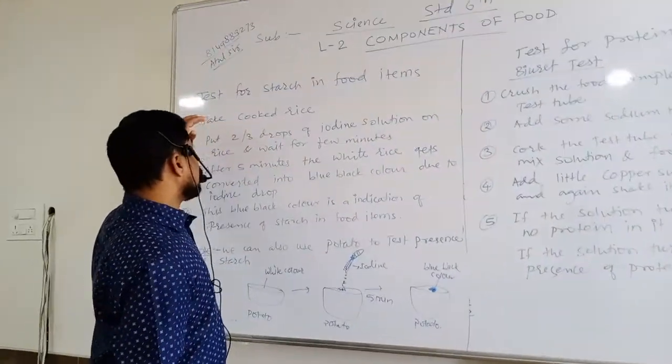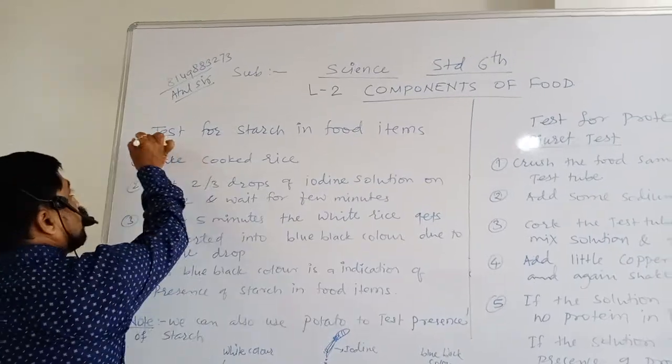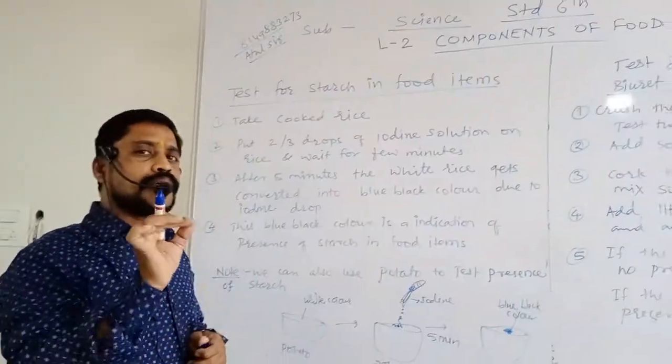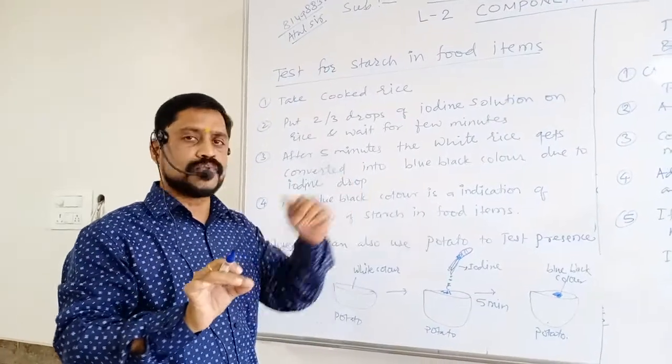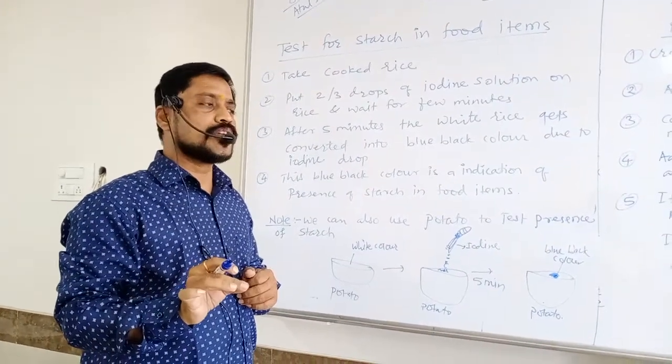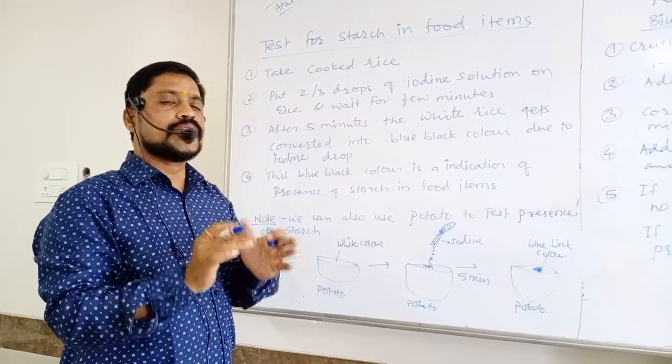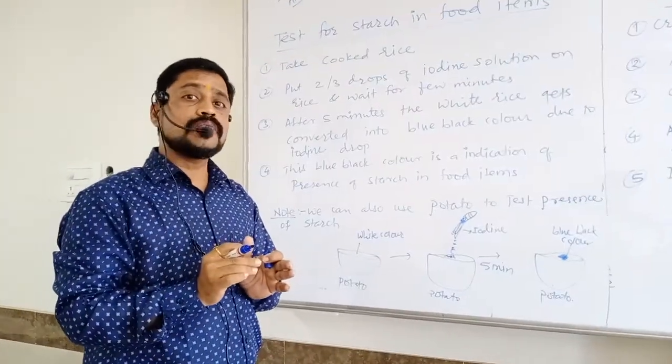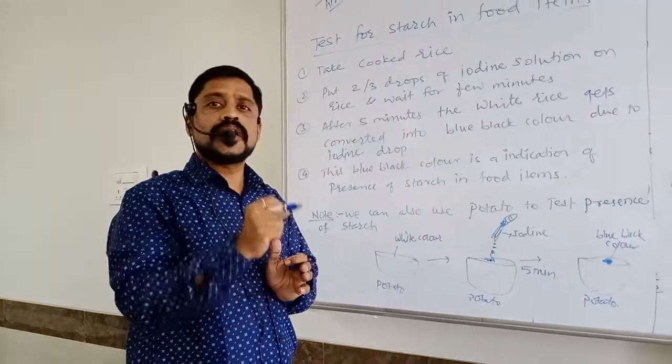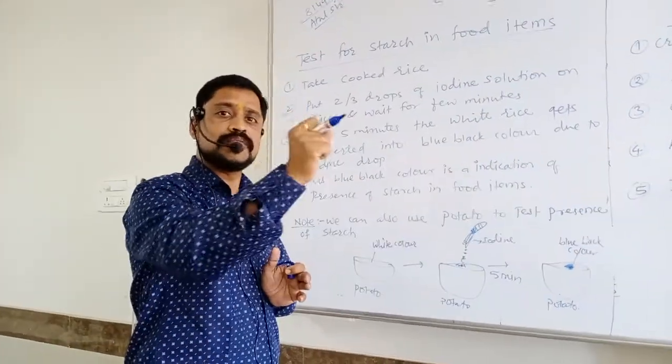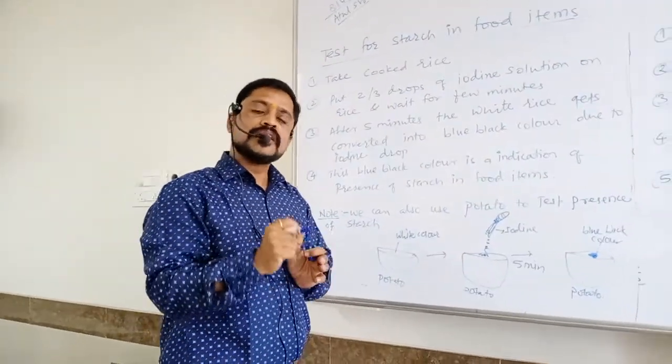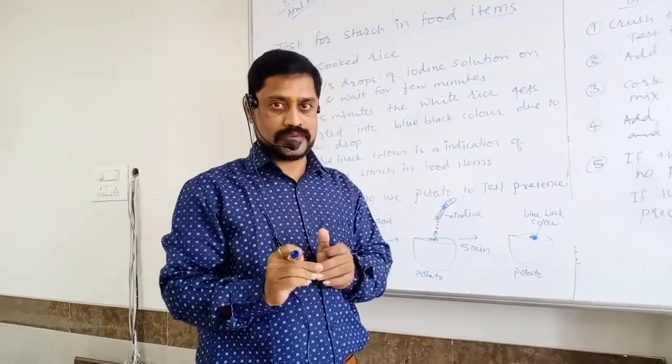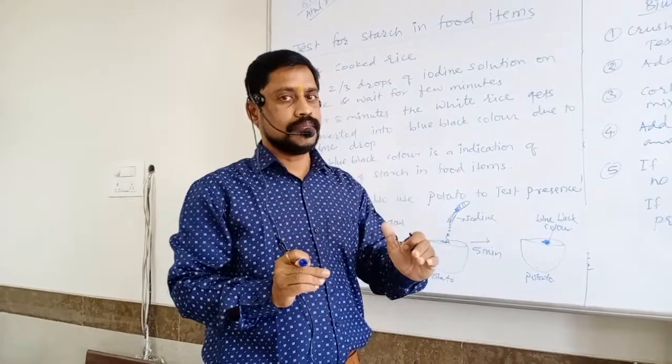In this we have to understand the presence of particular nutrients in the given food items. As we know that we have learned protein rich food, carbohydrate rich food and fats rich food. But how can we confirm that whether really carbohydrates present in the given food item. For that there are different kinds of tests have been given in our textbook. So one by one we will learn.